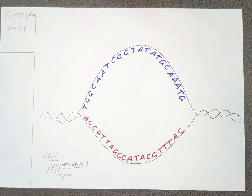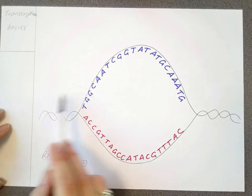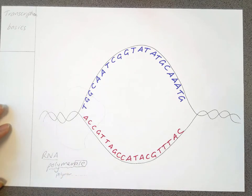So lots going on there and the RNA polymerase helps to open up the DNA strand, so unzip it essentially at the part it needs to get to, and it facilitates that free nucleotide grabbing.